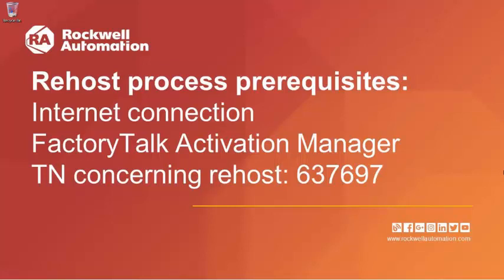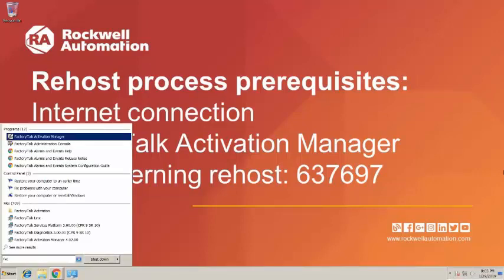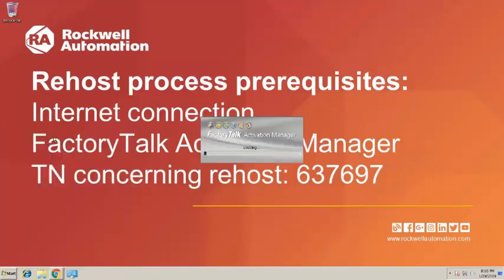From the Windows Start menu, type Factory Talk Activation into the Search Programs and Files field. You will see Factory Talk Activation Manager listed under Programs. Click on the program to open.